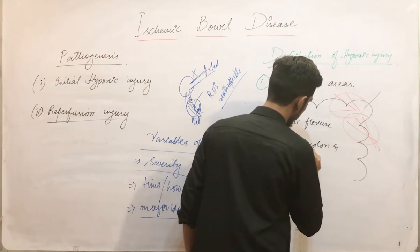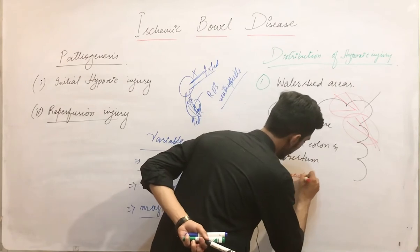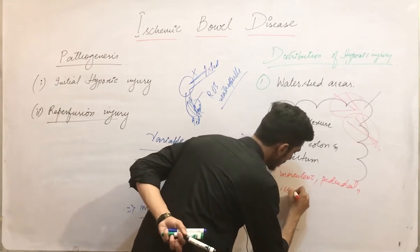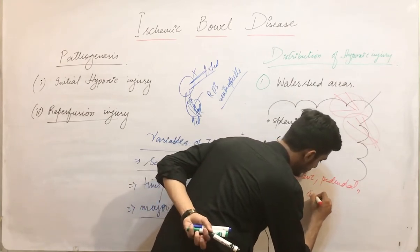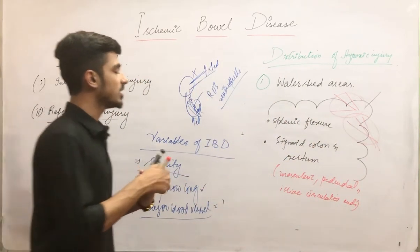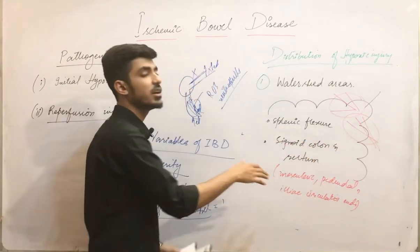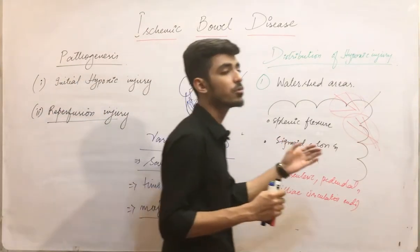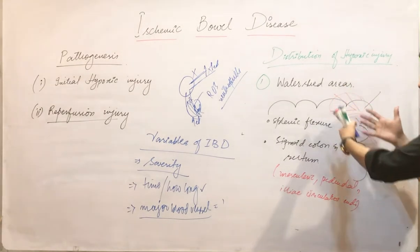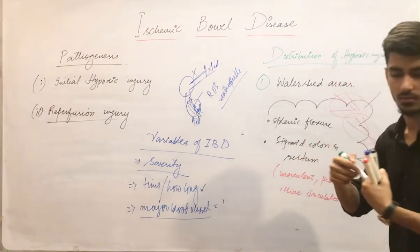The second watershed area is the sigmoid colon and rectum, where the mesenteric and pudendal as well as the iliac circulation end. So the splenic flexure is where the superior and inferior mesenteric circulations end, and the sigmoid colon and rectum is where the mesenteric, pudendal, and iliac circulations end. These areas are most prone to ischemic injury.